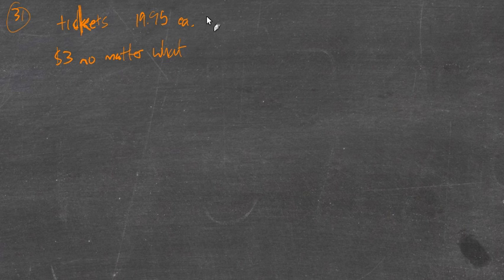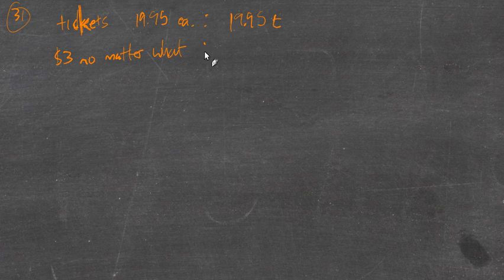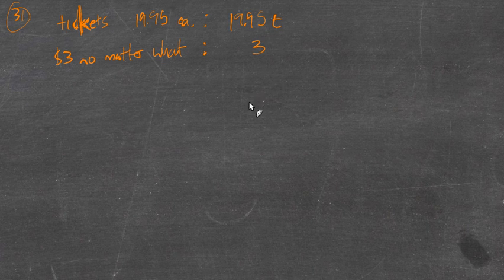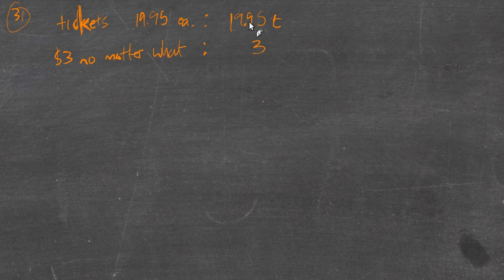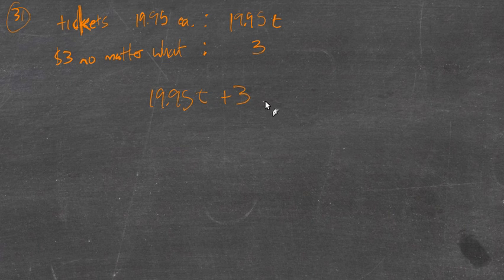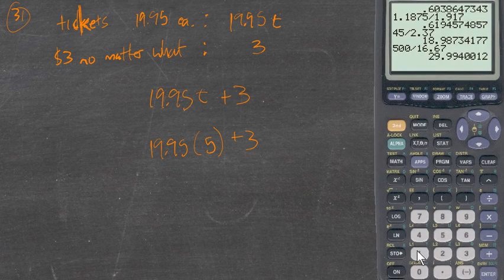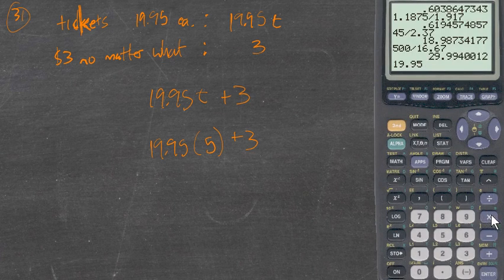So the tickets are $19.95 each. So the amount that you pay for tickets is going to be $19.95 times the number of tickets. So let's maybe use T for tickets. The cost for the $3 charge is just $3. So how are we going to find the total cost? Well, we're going to pay for the tickets, we're going to pay the $3. The $3 is going to be added on to the cost of the tickets. So $19.95 times the number of tickets plus just $3 would be the total cost. And if we buy five tickets, let's see what that would be. $19.95 times five plus three. $102.75.